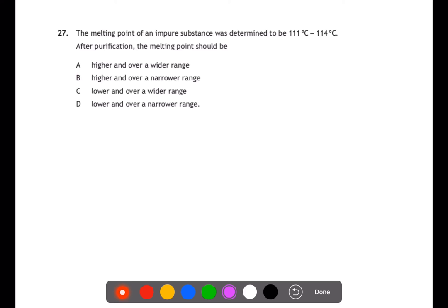Question 27. The melting point of an impure substance was determined to be 111 to 114. After purification, what should happen to the melting point? When you have impurities within a substance, you often find that your melting point is over quite a wide range and is slightly lower than you would expect it to be. So when you purify it, you should find it slightly higher and narrower than it was when it was impure.